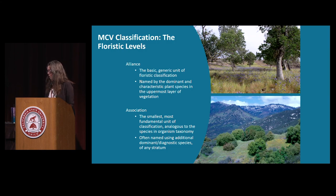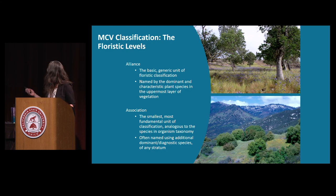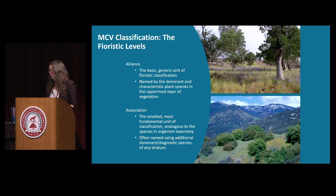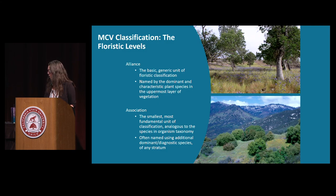An alliance is at roughly the genus-species scale. You would think about an oak woodland at the alliance level, and once you get to the association level, you're thinking about what's happening in the understory or what might be co-dominating. For example, if you have an herbaceous understory, that would be an association level of the blue oak alliance.